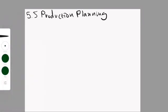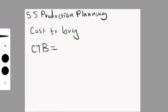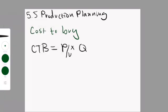So you might want to make the decision between making your products yourself versus buying your products. There's cost to buy and cost to make. For cost to buy, you do the price per unit times quantity.